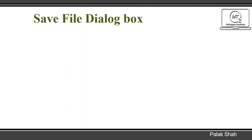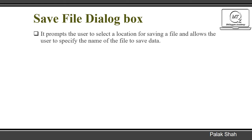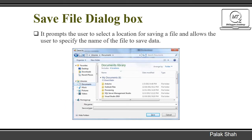Save File Dialog Box. It prompts the user to select a location for saving a file and allows the user to specify the name of the file to save data. Here we can see the image of the save file dialog box. If the user wants to save any data or file to a specific location, they click the Save button to save that data to a particular folder.